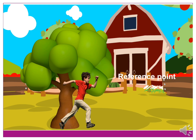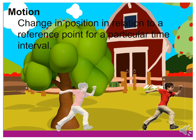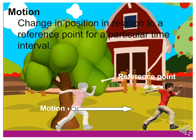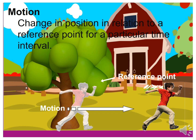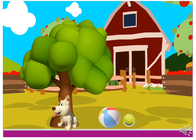Yes, that is correct. Our reference point is the tree. If there is a change in position with respect to its reference point, the boy is considered in motion. So what do you mean by motion? Motion is the change in position in relation to a reference point for a particular time interval. But if there is no change in position in a particular time interval, the object is said to be at rest.